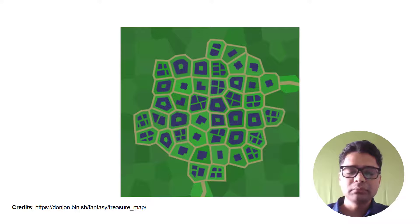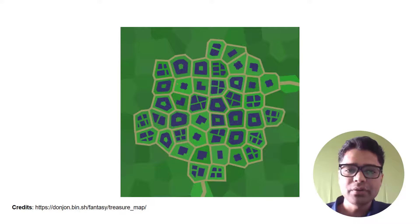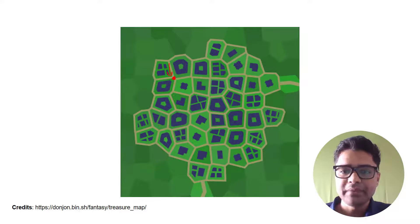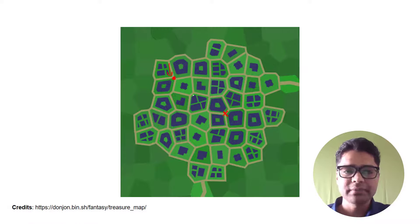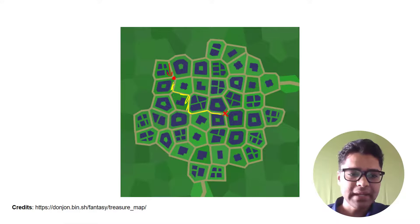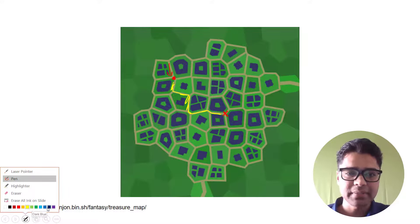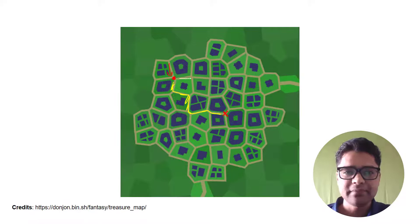Now here is a fictitious map — it does not exist in real life. We are standing at one point and we want to reach point X. There are certain paths we can take to move from one place to another. One path goes like this — that's one path.